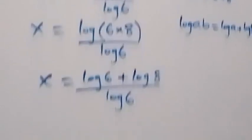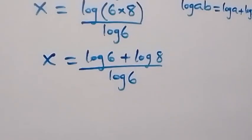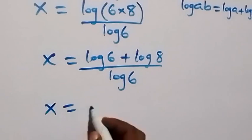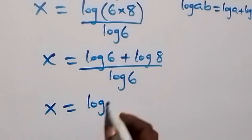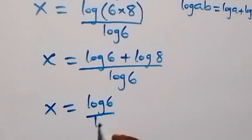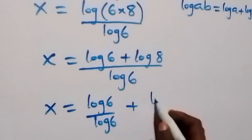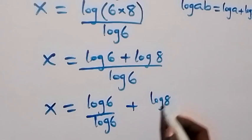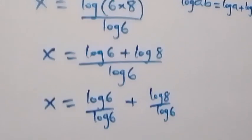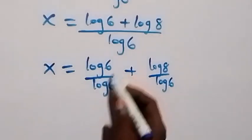Then we can separate this: log 6 over log 6 equals 1, so we have x equals 1 plus log 8 over log 6.